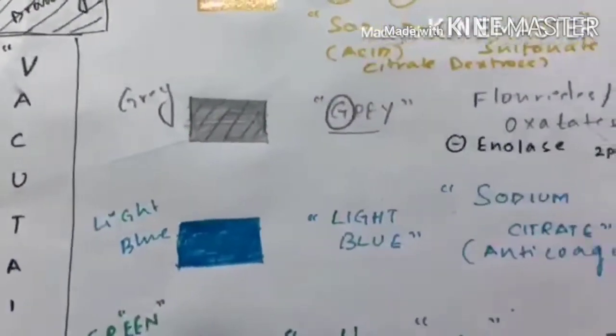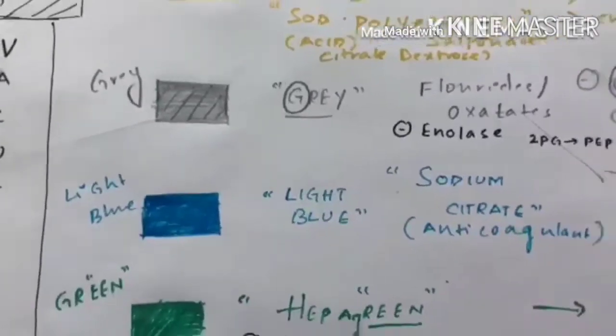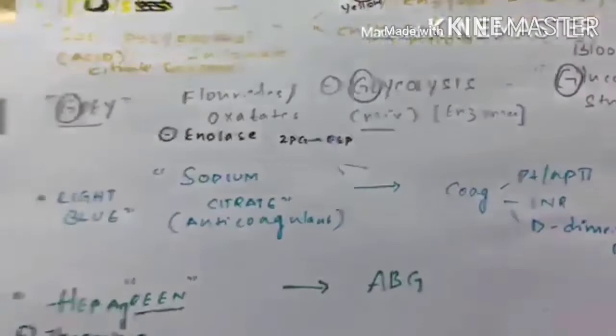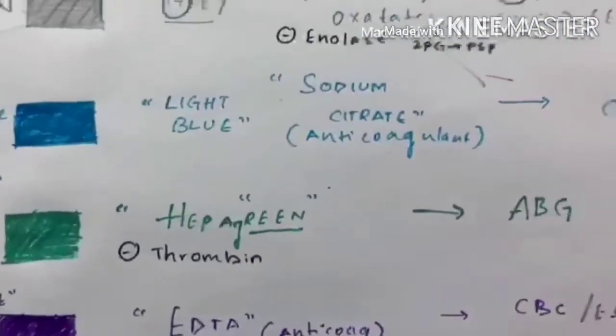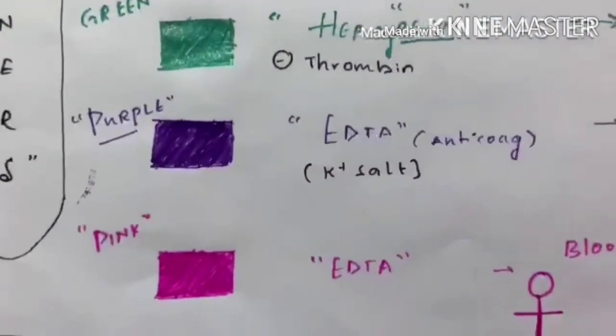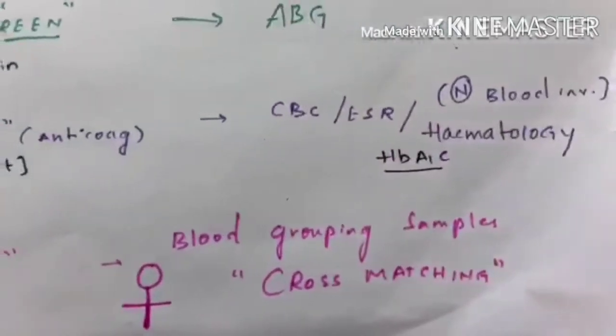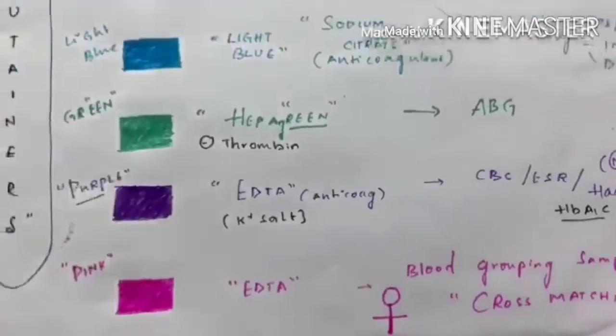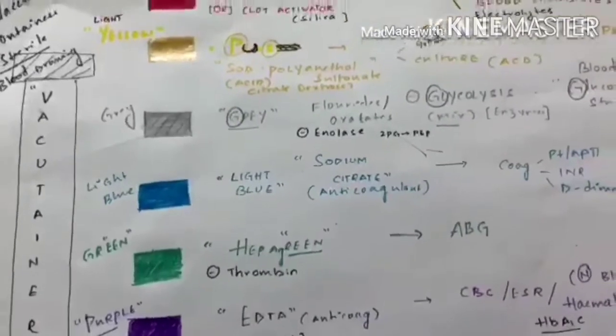Next coming to light blue, which doesn't have particular mnemonic. Light blue bottle contains sodium citrate, useful for coagulation studies. Then green bottle contains hepagreen, useful for ABG. And then purple and pink both containing EDTA. Purple for normal hematology and pink for cross matching. So the only bottle that doesn't have a mnemonic is light blue, which we need to remember somehow.